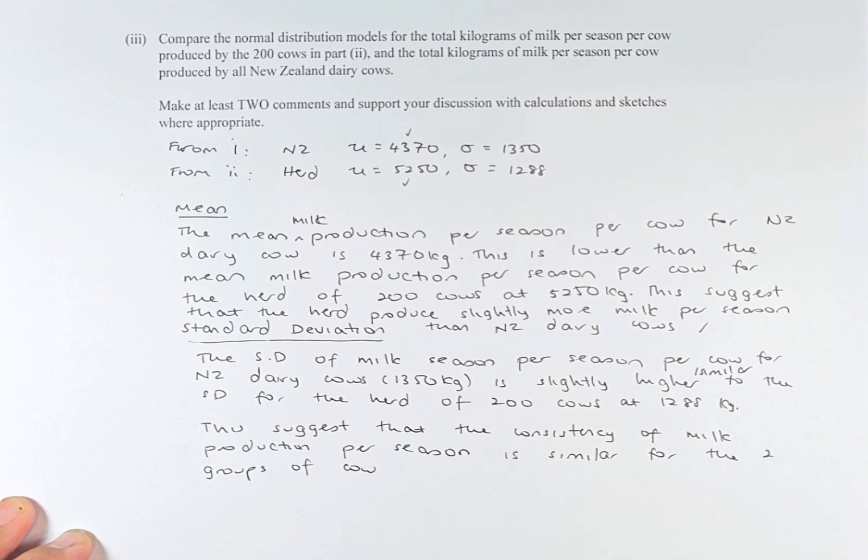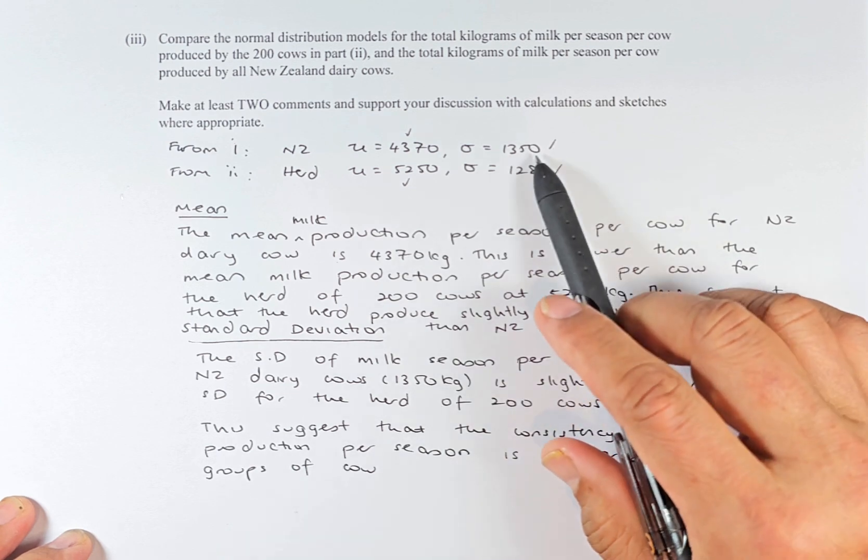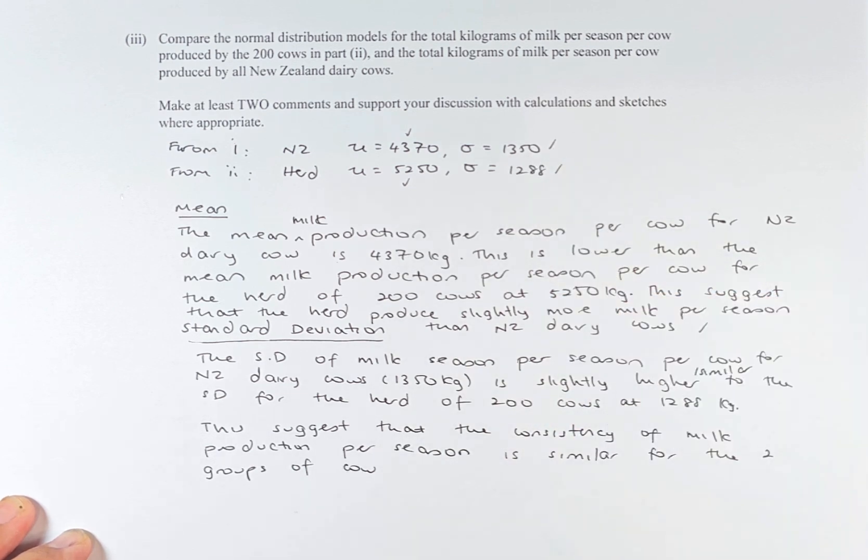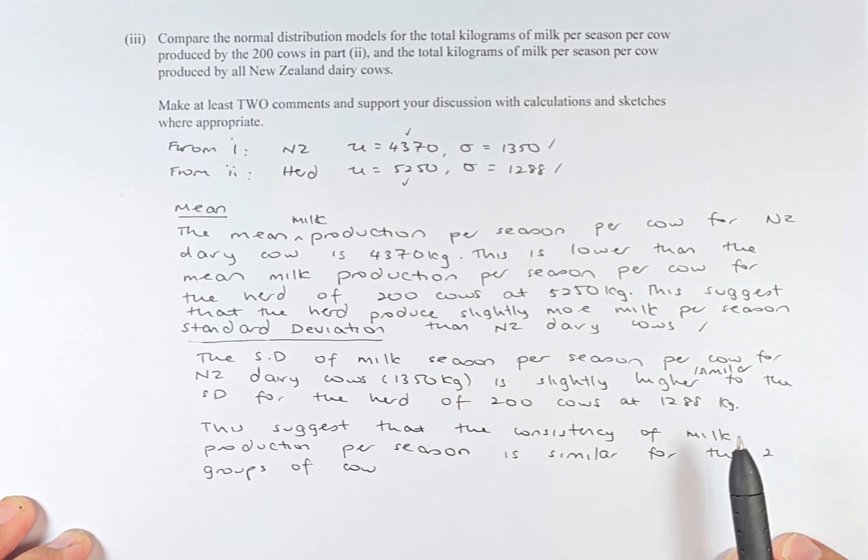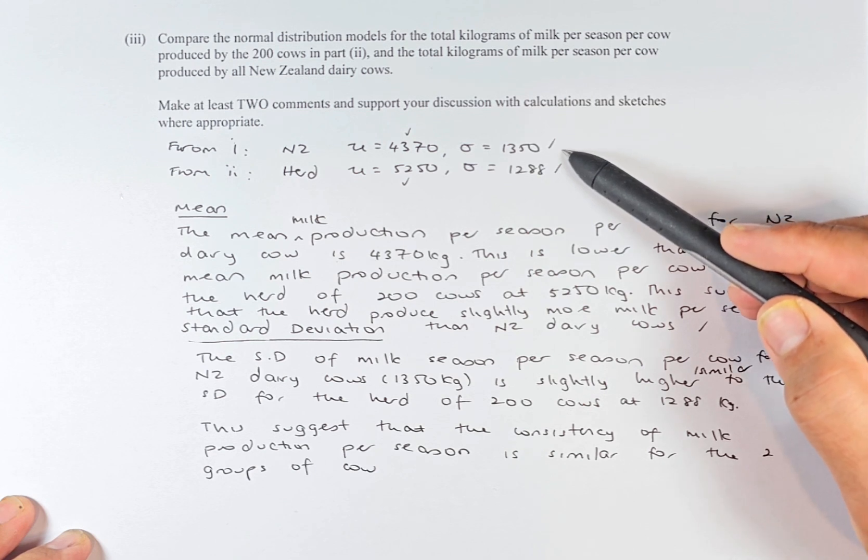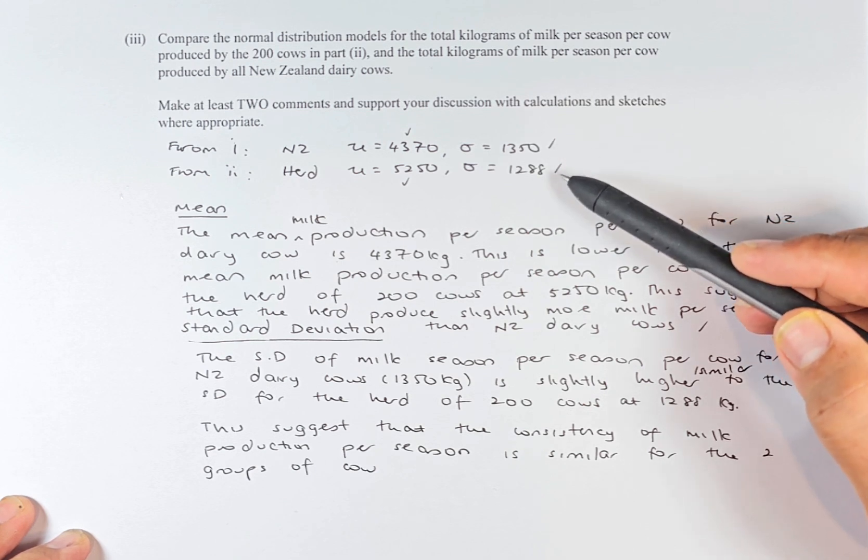The second part we are going to compare is the standard deviation. So the standard deviation of milk per cow for New Zealand dairy is 1350 kg, and it is slightly higher or quite similar to the herd of 200 cows at 1288 kg. This answer is actually obtained from the marking schedule.